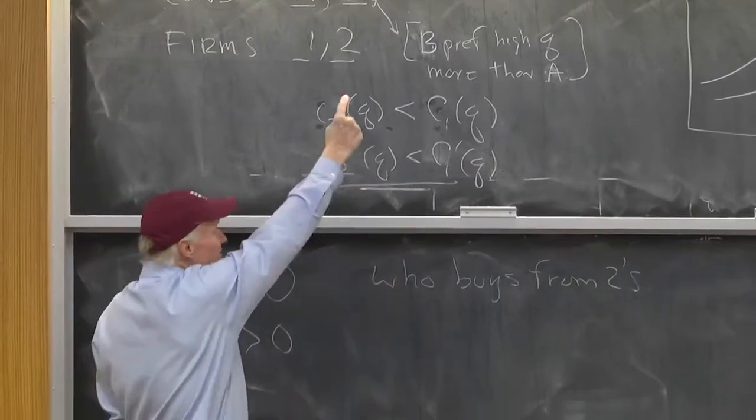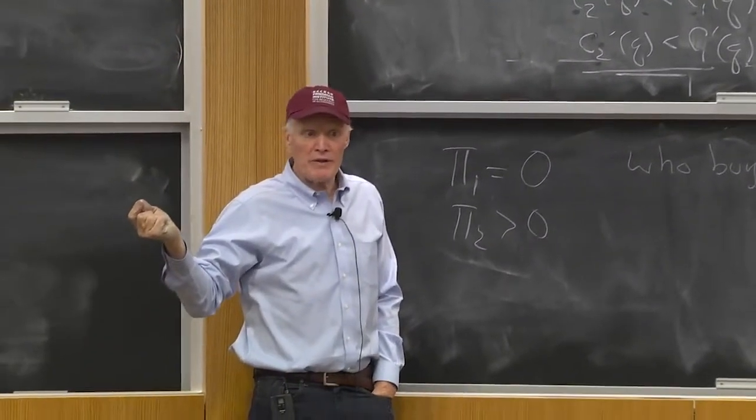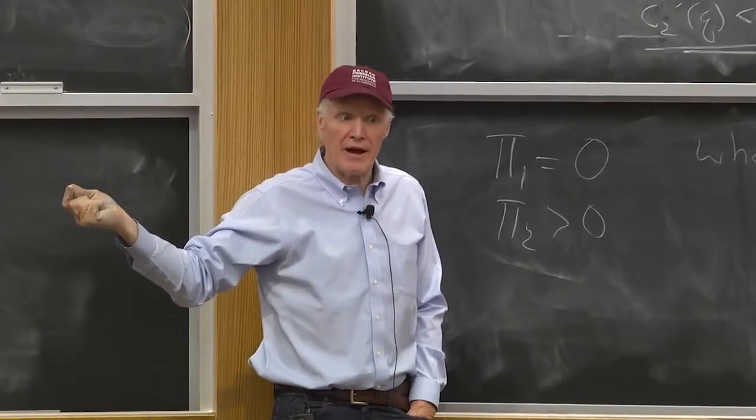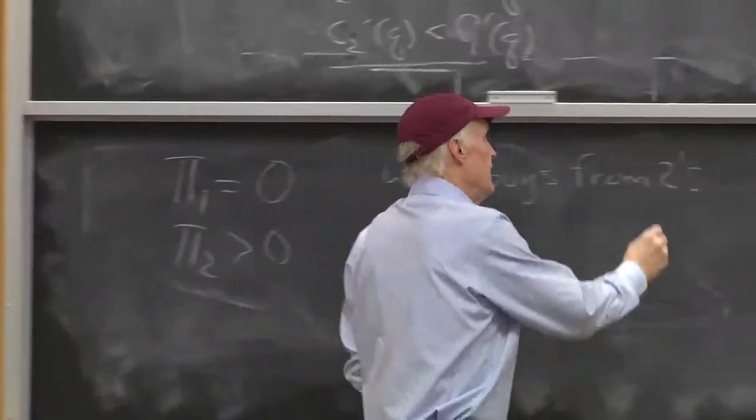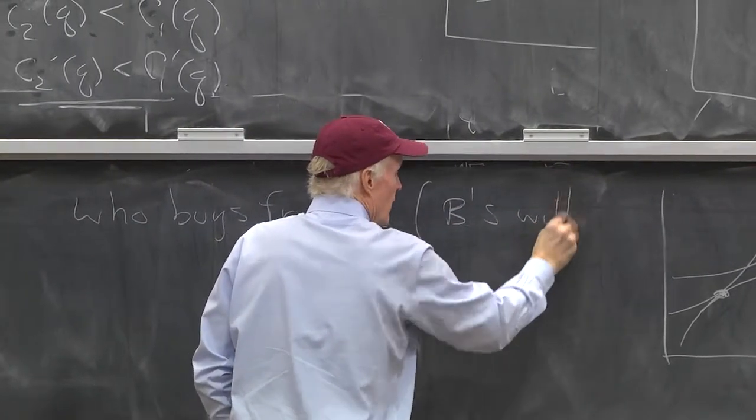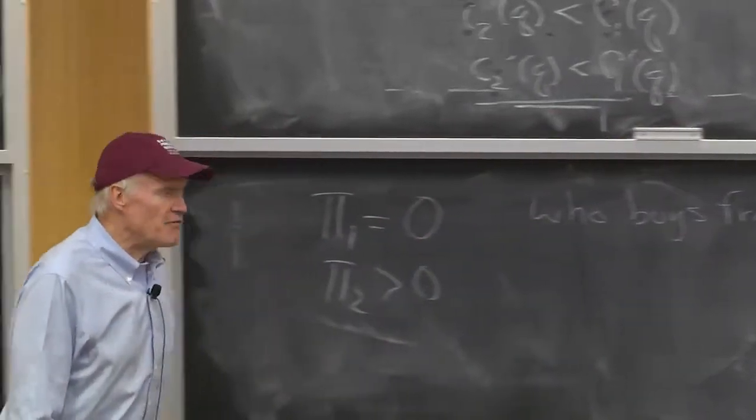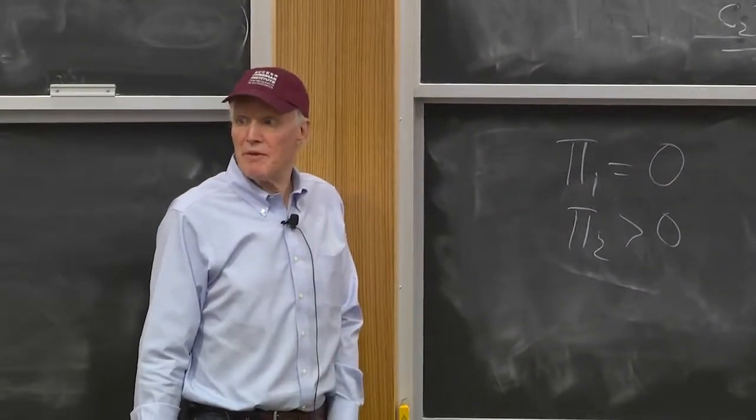Now, if you look on the demand side, you'd say if the A's wanted to buy the higher quality, then the B's would certainly want to buy the higher quality. So, we know B's will, right? That is, the B's will buy from twos for sure. Some of the B's at least.